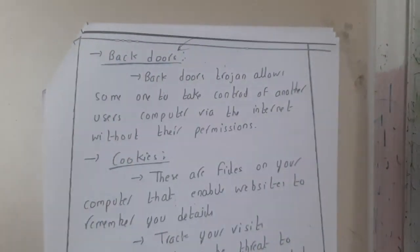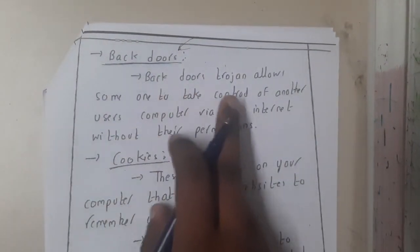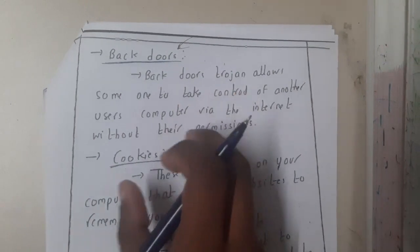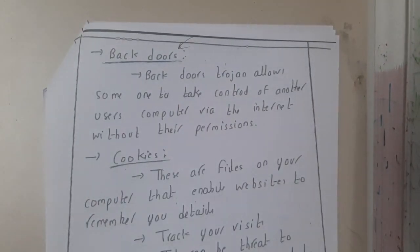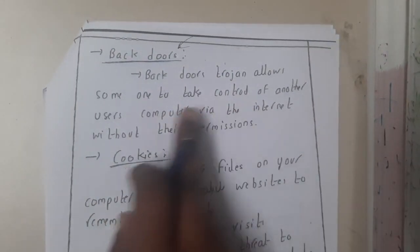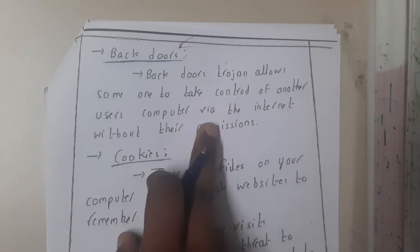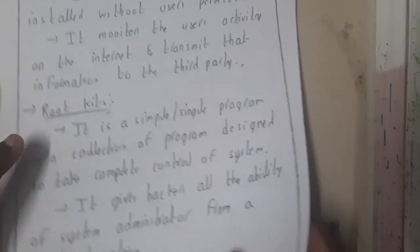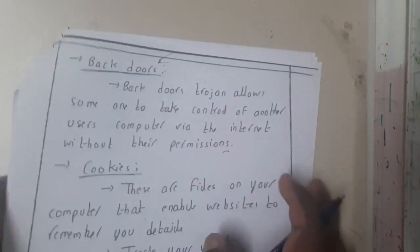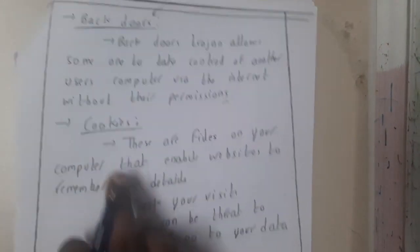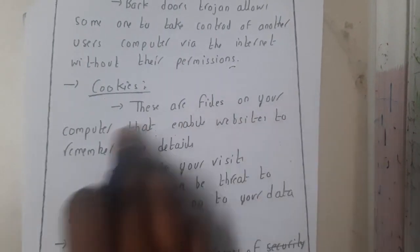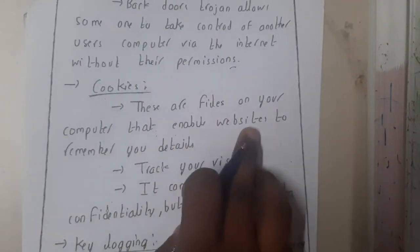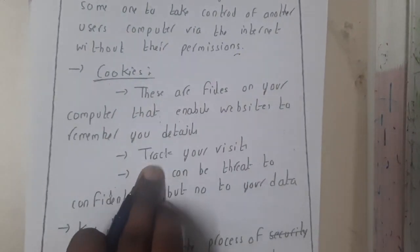Another type of threat is a backdoor. We will be discussing backdoor attacks in a later lecture. Backdoors are Trojans that allow someone to take control of another user's computer via the internet without permission. This is almost similar to rootkits — both perform the same kind of remote unauthorized operation.